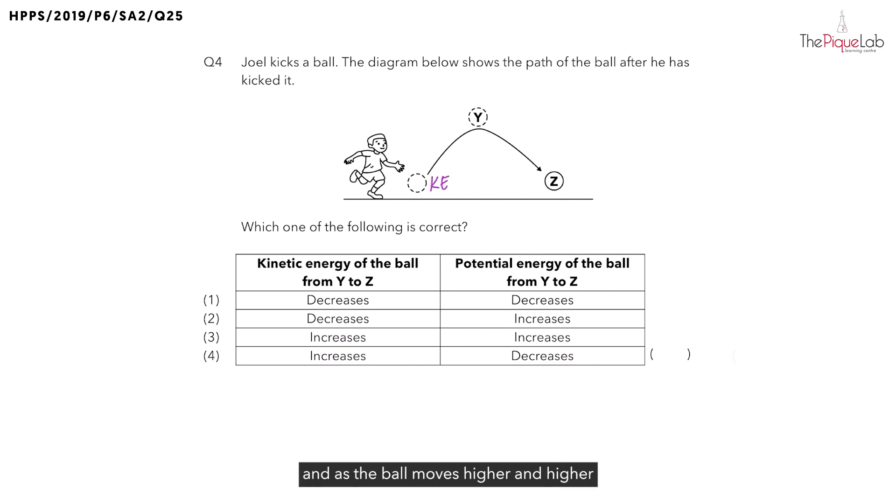And as the ball moves higher and higher above the ground to position Y, what is the energy possessed by the ball? The ball will possess gravitational potential energy, or GPE for short. So the kinetic energy possessed by the ball is being converted to GPE.